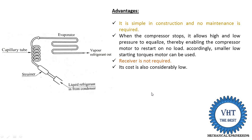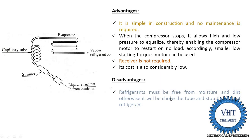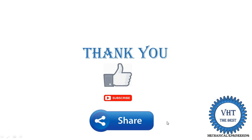The disadvantage is that the refrigerant must be free from moisture and dirt, otherwise it will choke the tube and stop the flow of refrigerant. If there is moisture inside the system, it converts into ice inside the capillary tube and chokes the system, stopping refrigerant flow. Therefore, the system must be free from moisture and dirt. Thank you for watching this video — if you learned something, please like, subscribe, and share with your friends.